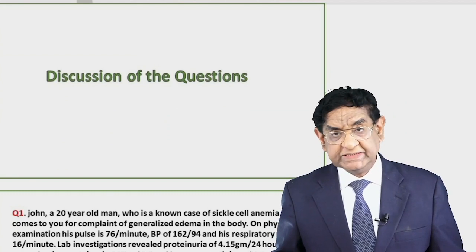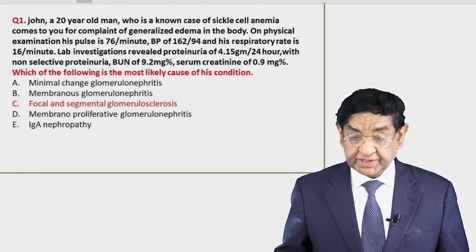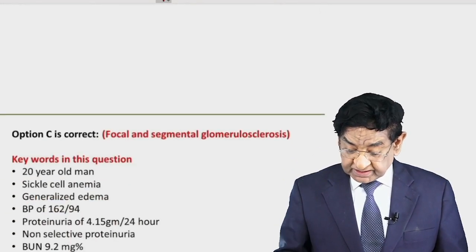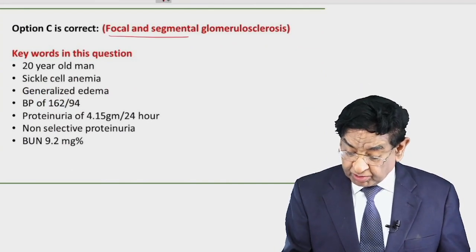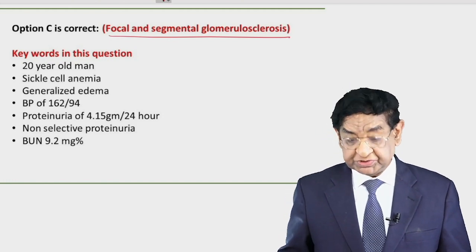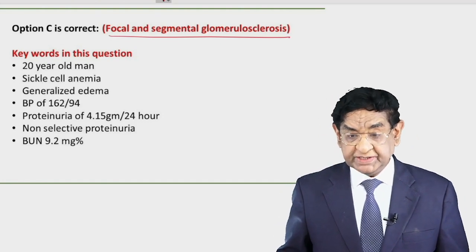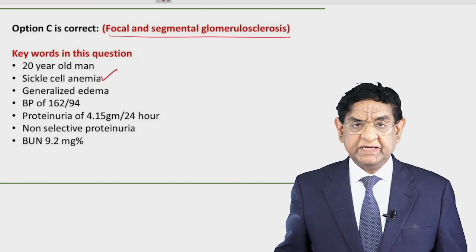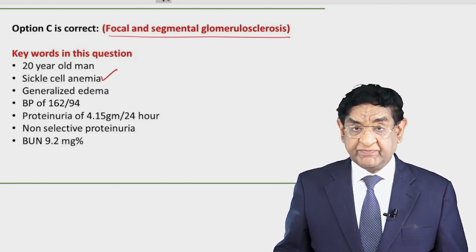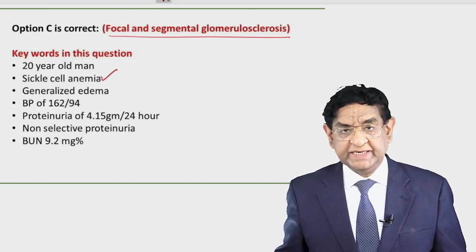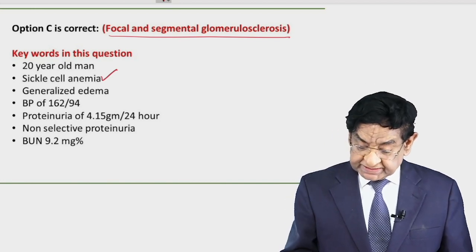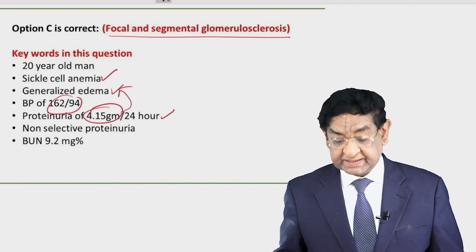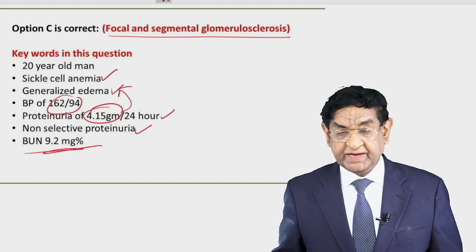Discussing the question: a 20-year-old man — the most likely diagnosis is FSGS. Key words: 20-year-old man (FSGS occurs more commonly in ages 20-30), sickle cell anemia (a strong predisposing factor), generalized edema with proteinuria in the nephrotic range, high blood pressure, anasarca, and non-selective proteinuria. BUN is 9.2, meaning renal failure has not yet occurred.